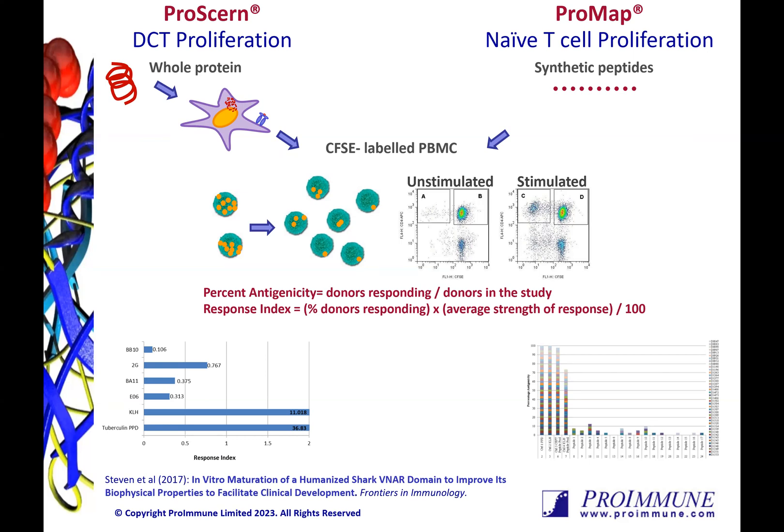In the ProMAP T-cell assay, we directly load the PBMCs with synthetic peptides. These can be sequences derived from the ProPresent assay and in silico analysis, or even as a library of overlapping peptides from a region of interest. This is yet another tool you can use without having protein available and when you want to compare mutations or variants against the wild type sequence.